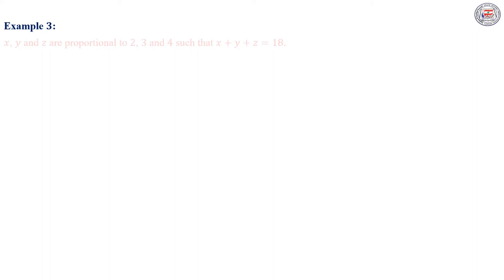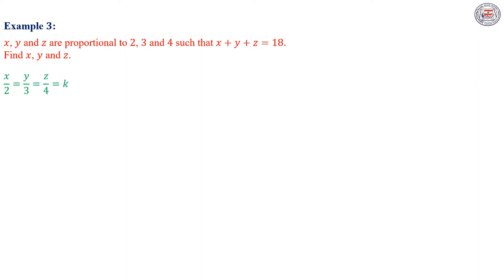Let's take our third example for today. x, y, and z are proportional to 2, 3, and 4 such that x + y + z = 18. Find x, y, and z. Since x, y, and z are proportional to 2, 3, and 4, we can deduce that x/2 = y/3 = z/4 = k. If x/2 = k, then x = 2k. If y/3 = k, then y = 3k. If z/4 = k, then z = 4k.